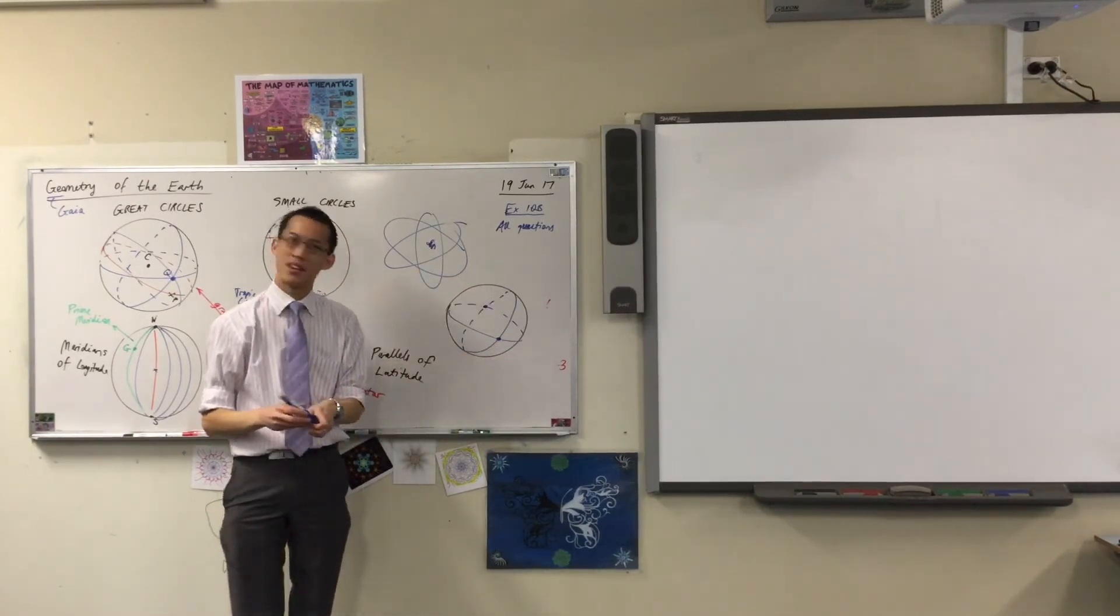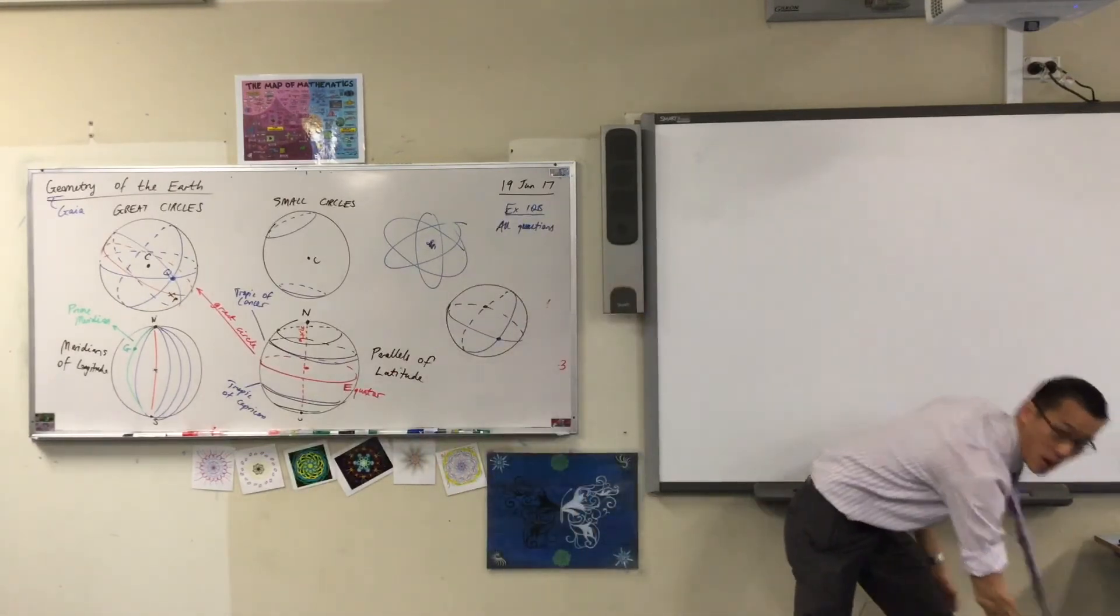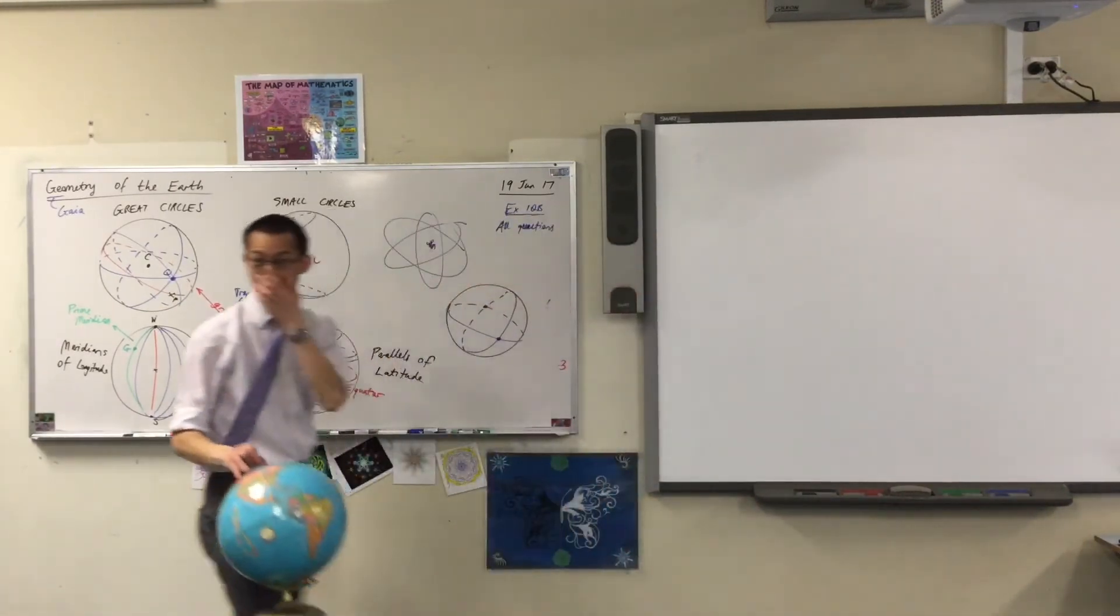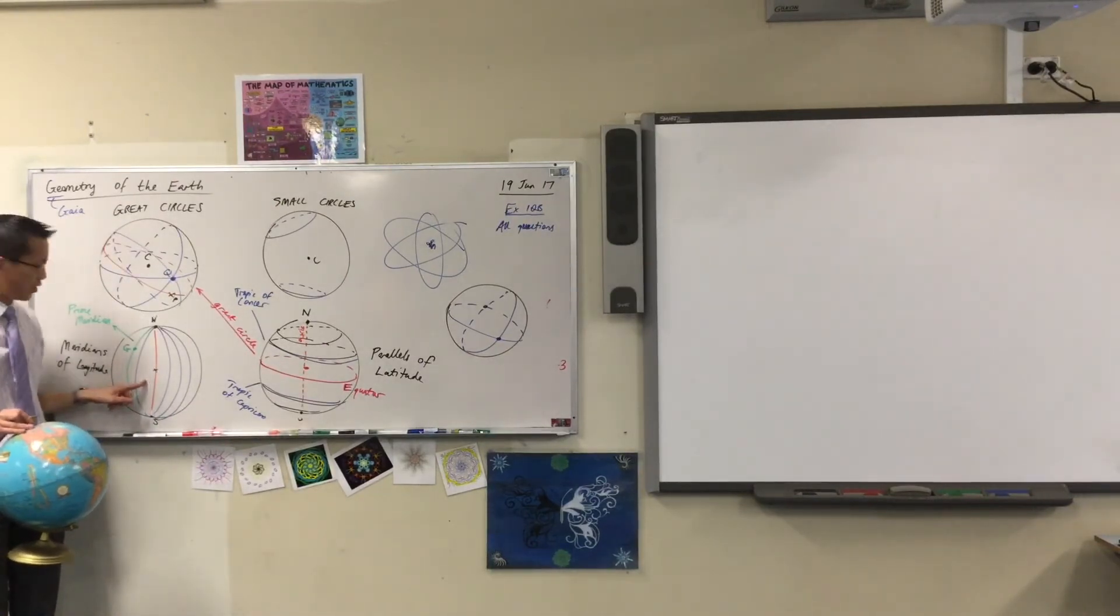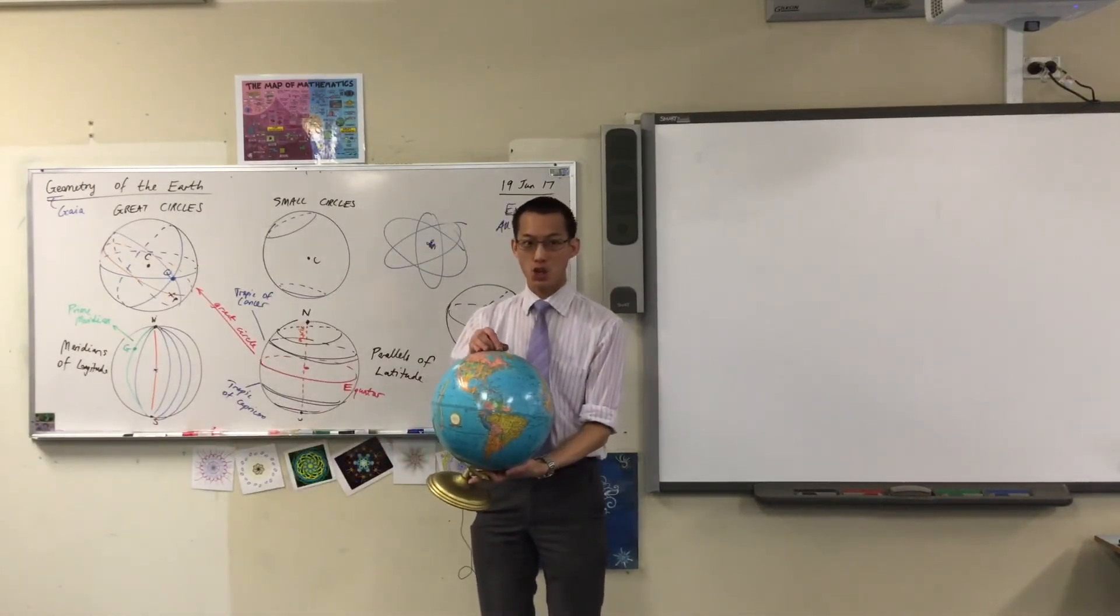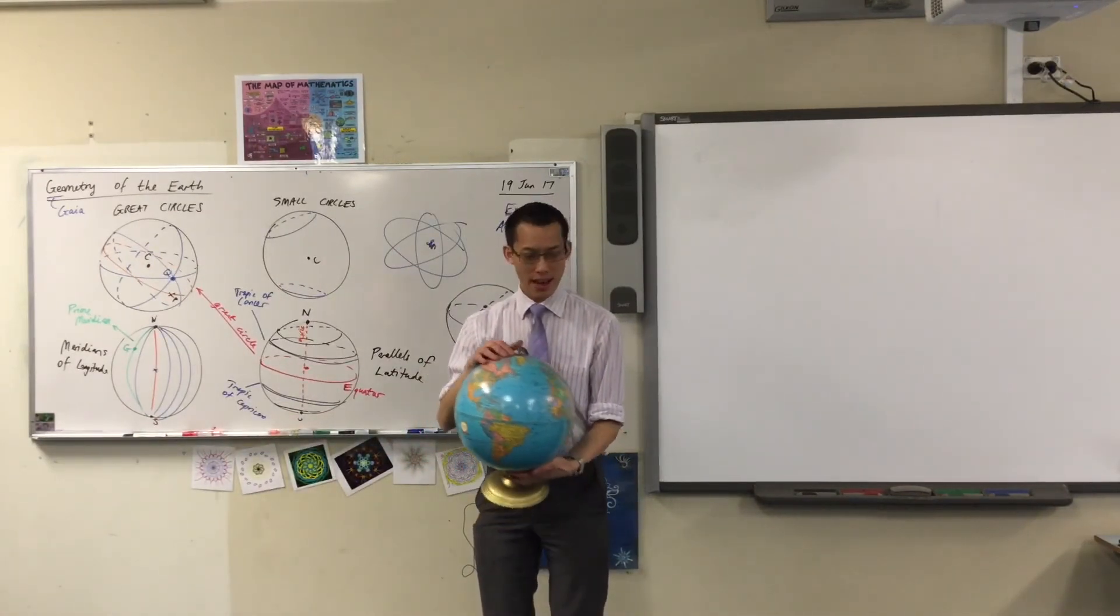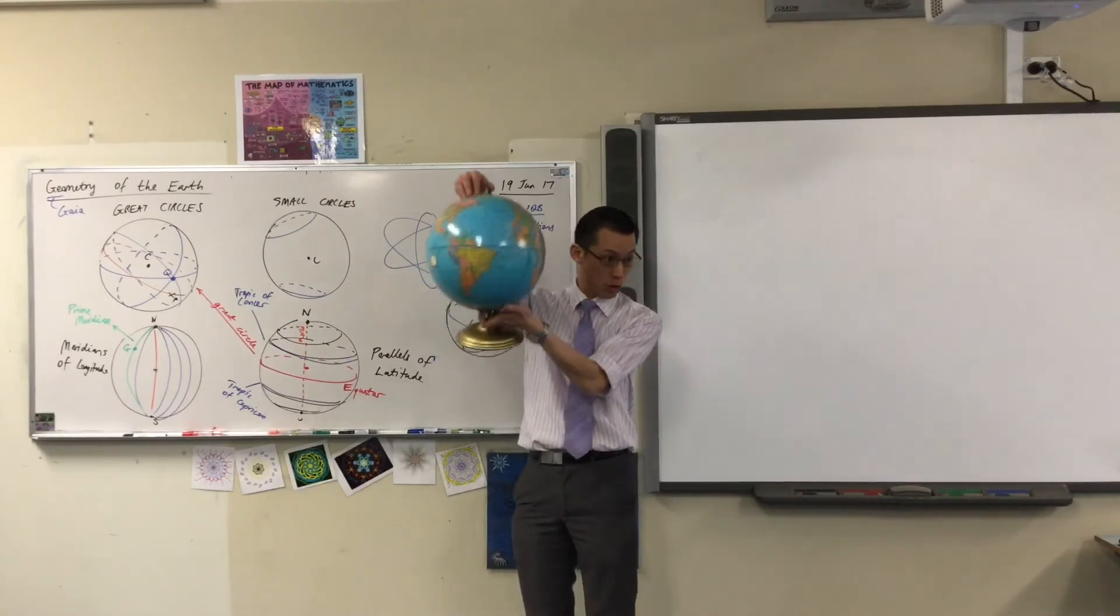But these two points are not random. What spots are they? They're on opposite ends. Remember if you come back to these guys here, your meridians of longitude. What's special about the meridians? They're every single one is a great circle. And every single one passes through the North and South Pole, your two spots.